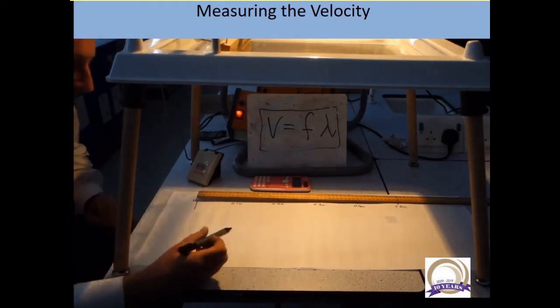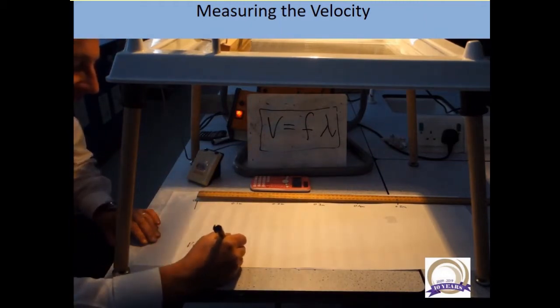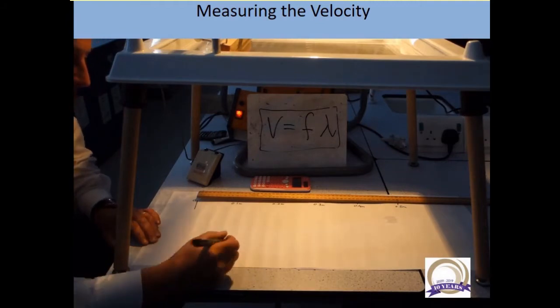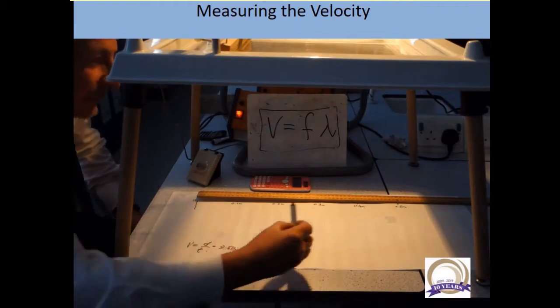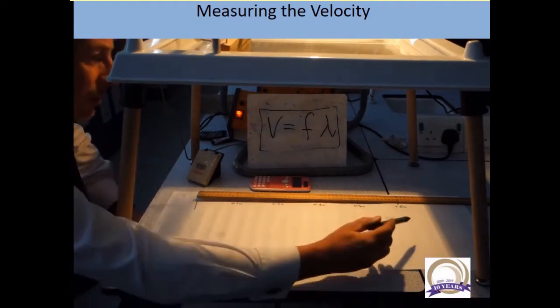So if I can then get a time, the velocity will be 0.5 meters divided by that time. So this is the time that the wave is taking to go from 0 to 50.